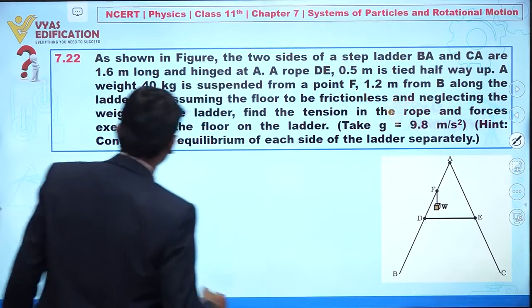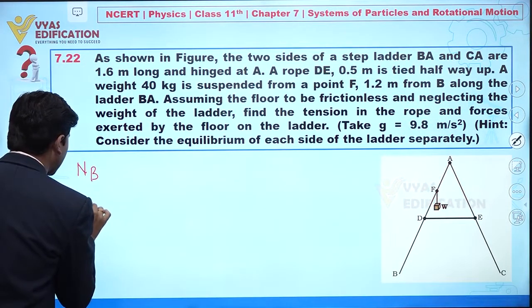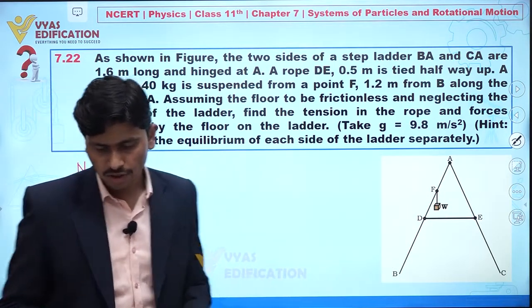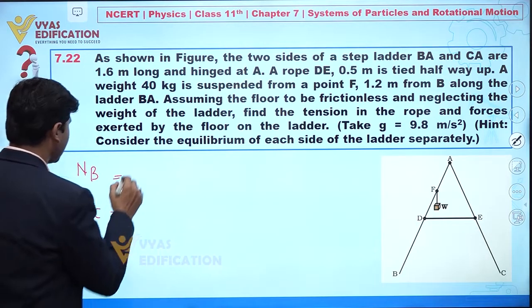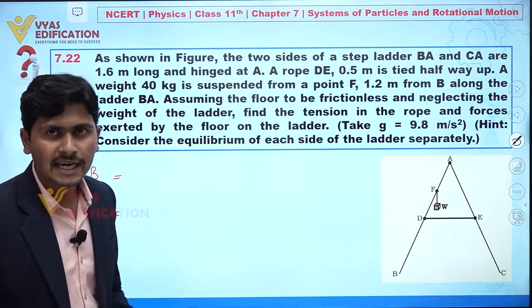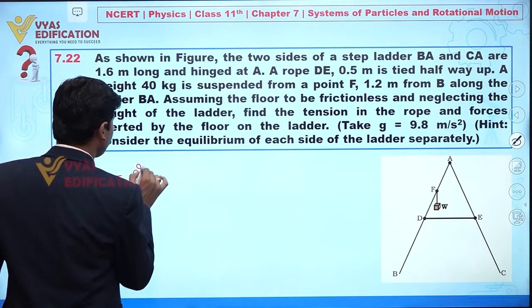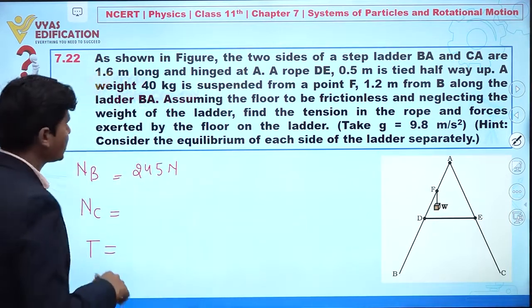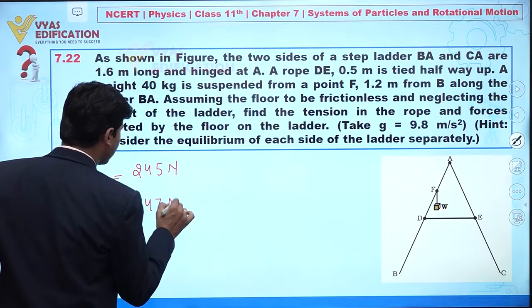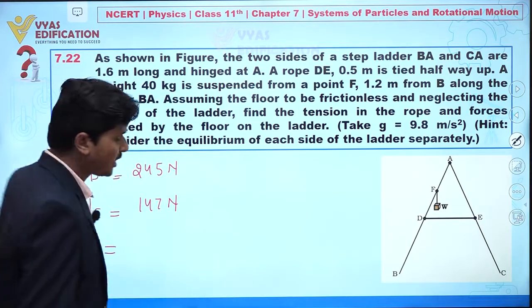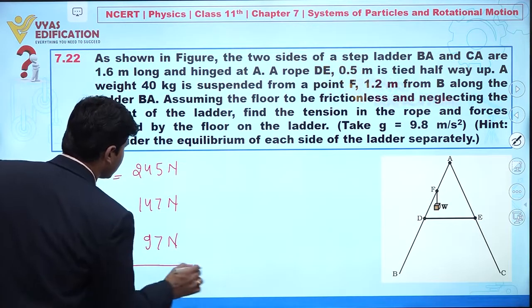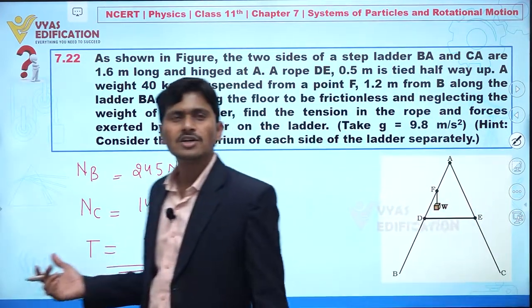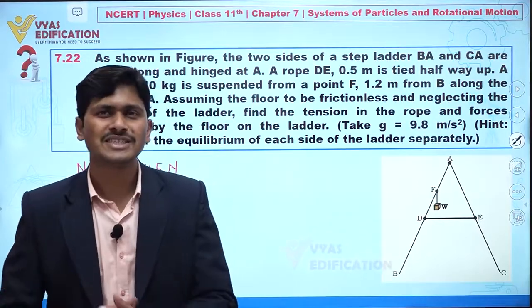Solving all three equations, we get: NB, the normal reaction at point B, equals 245 N; NC equals 147 N; and tension T equals 97 N. These are the final answers for question 7.22.